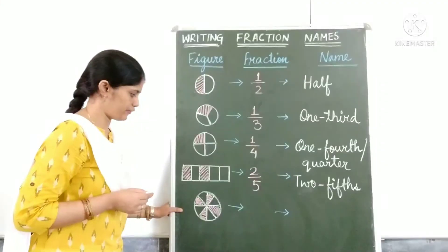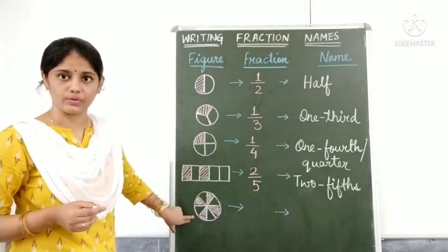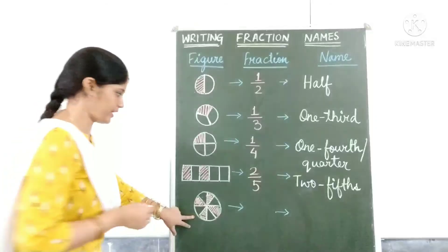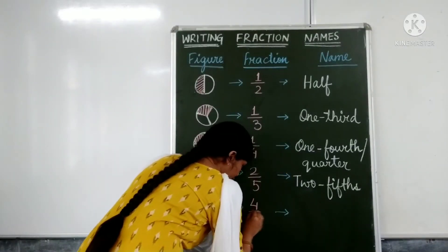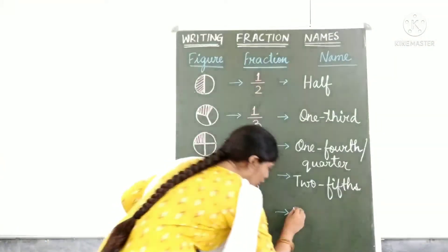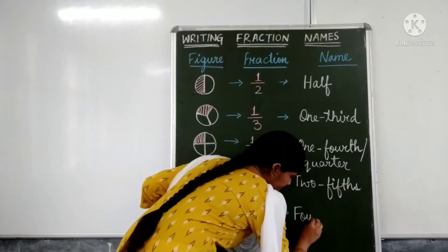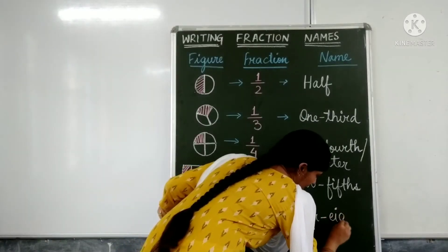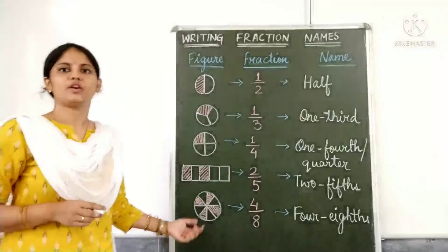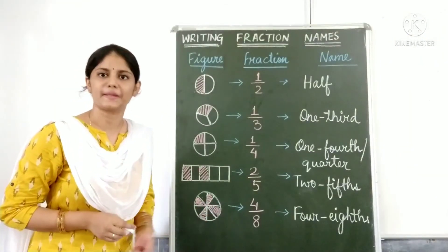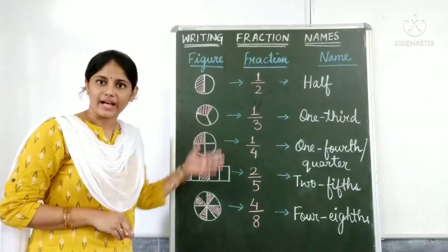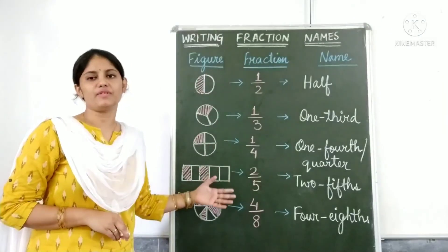Last figure: it has 8 equal parts and 4 parts are shaded. The fraction for the shaded part is 4 by 8. The name is four eighths — E-I-G-H-T-H-S — 4 parts out of 8 parts. In this way, we can write fractions as well as their names.